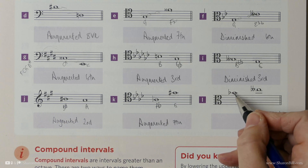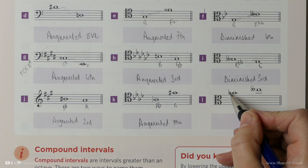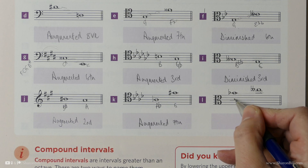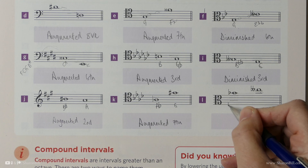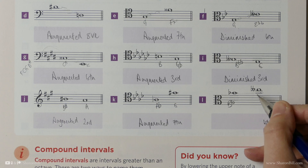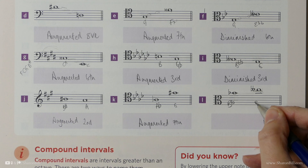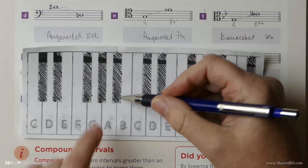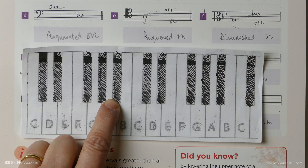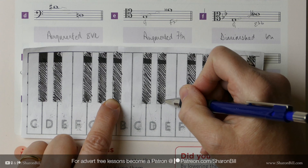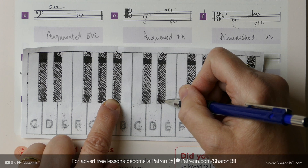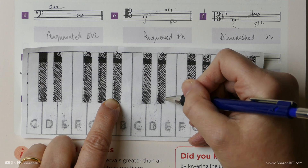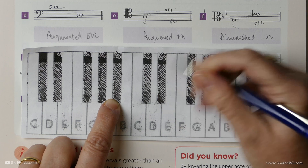And then here, let's count the spaces first — we've got the interval of a fourth — 1, 2, 3, 4. We have B flat, and then C, D, E double flat. B flat to E flat: in B flat major and also in B flat minor, B flat to E flat is a perfect fourth. Remember, in fourths, fifths, and octaves we have just perfect — no major or minor. However, because it's gone from E flat to E double flat, we've made it smaller — we've diminished the interval by a semitone. It goes straight from perfect to diminished, so that's a diminished fourth.